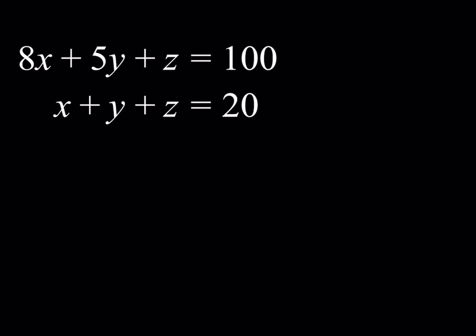So we have this system: 8x + 5y + z = 100, and x + y + z = 20, and we're looking for integer solutions. In this case, I would like to oversimplify the problem and look for positive integers, though we can also talk about the general case and find negative integers as well.